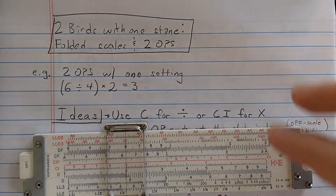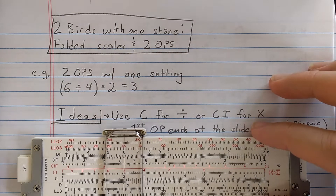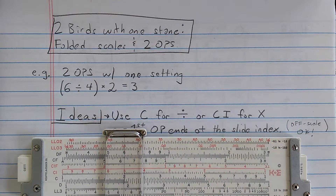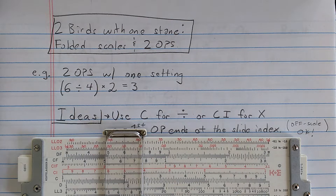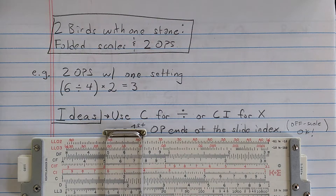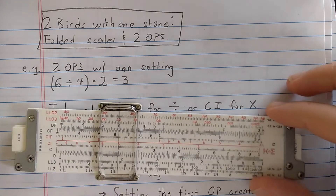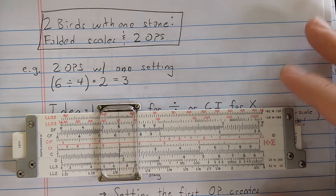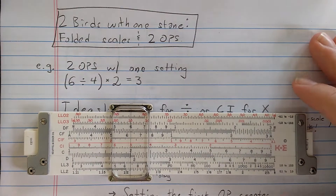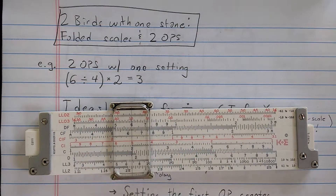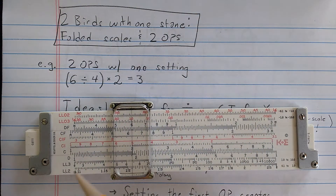Welcome back. This is Professor Herning. This will be a video about killing two birds with one stone — in other words, doing two operations with one setting of the slide on a slide rule with the full complement of folded scales.